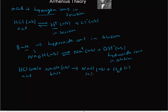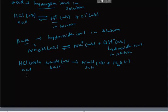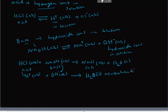But what exactly happens at the ionic level? When acid and base react, the H⁺ ions from the acid react with the OH⁻ ions from the base. The H⁺ and OH⁻ cancel out, forming H₂O, which is a neutral substance. That's why we call this process neutralization — the hydrogen ions and hydroxide ions react together to form a neutral substance called water.